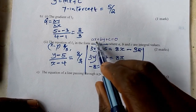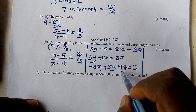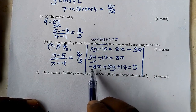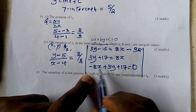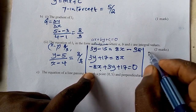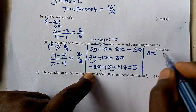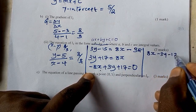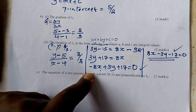We have written the equation in the required form: x term first, then y term, then constant, equal to zero. Note that if you introduce a negative into the equation, you get: negative 8 times negative 1 gives 8x; negative times positive gives minus 3y; minus 17 equals zero. Both forms are equivalent and correct.